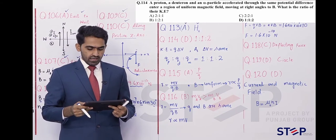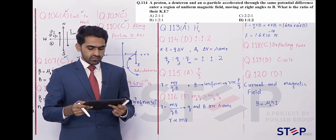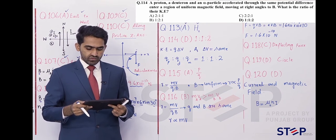A proton, a deuteron and an alpha particle accelerated through the same potential difference enter a region of uniform magnetic field, moving at a right angle to the magnetic field. What is the ratio of their kinetic energy?